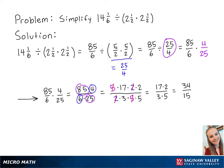Finally, we need to convert the fraction back into a mixed number. 15 goes into 34 two times with four parts left over. So this equals 2 and 4 fifteenths. And this is the final answer.